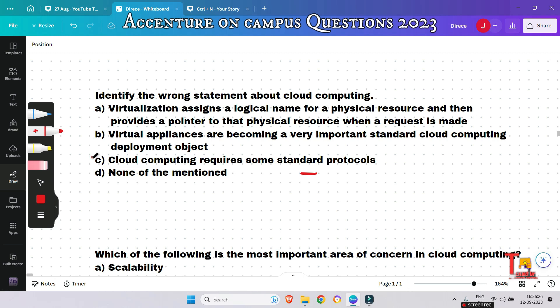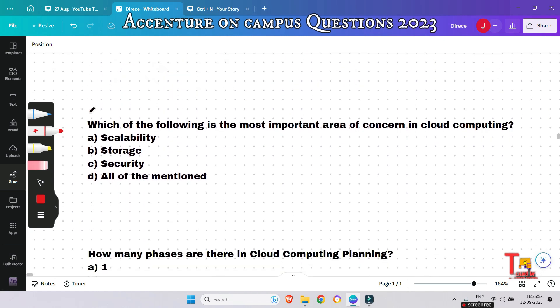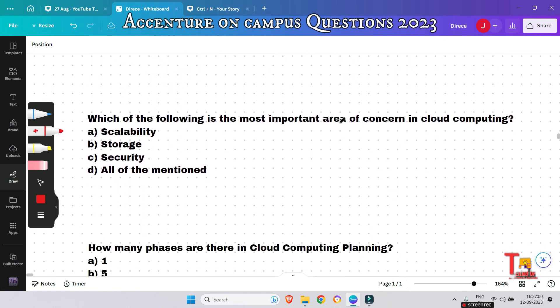Actually option C is wrong, other statements are true. The next question is: Which of the following is the most important area of concern in cloud computing? This question was asked in the on-campus drive.